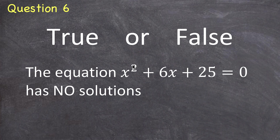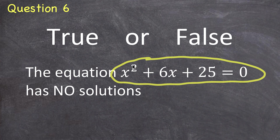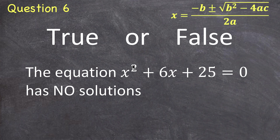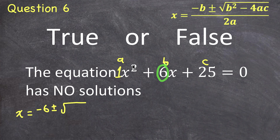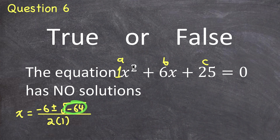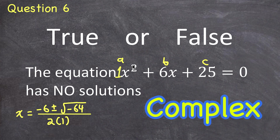Question 6. True or false? The equation x² + 6x + 25 = 0 has no solutions. Using the quadratic formula with a=1, b=6, c=25, I get x equals negative six plus or minus the square root of b² minus 4ac, which gives negative 64, all over 2. When the discriminant is negative, there are no real solutions — you can't square a real number and get a negative result. But the question just says no solutions, not no real solutions. That's the trick — it does have solutions; they're just complex.